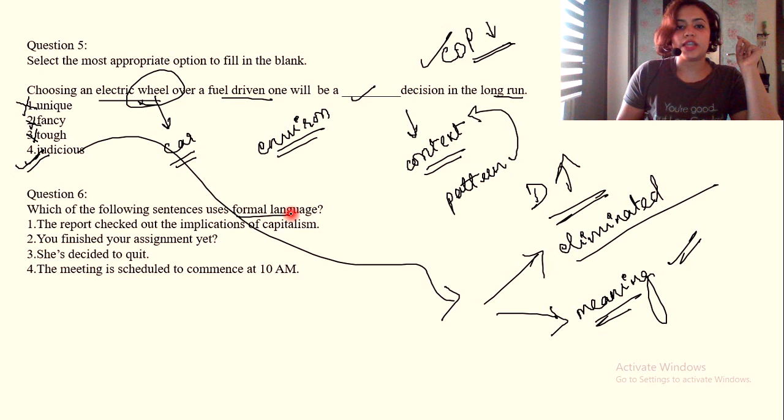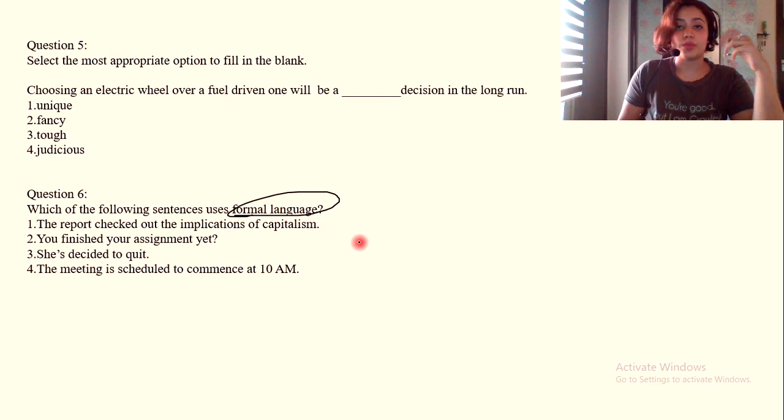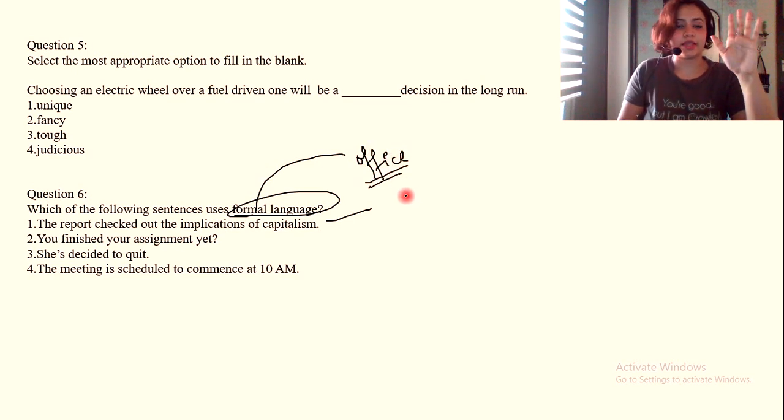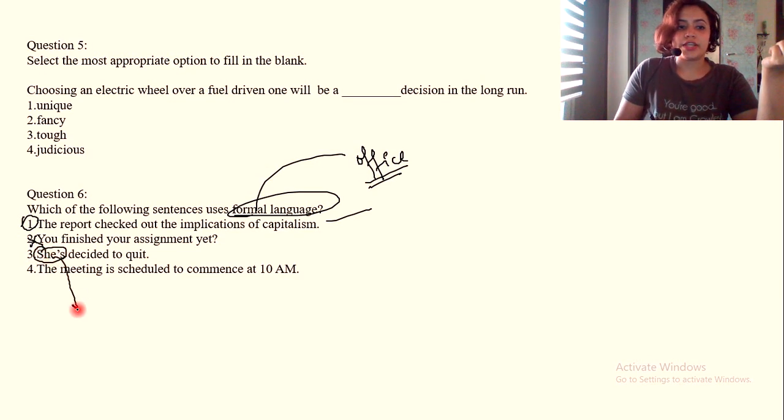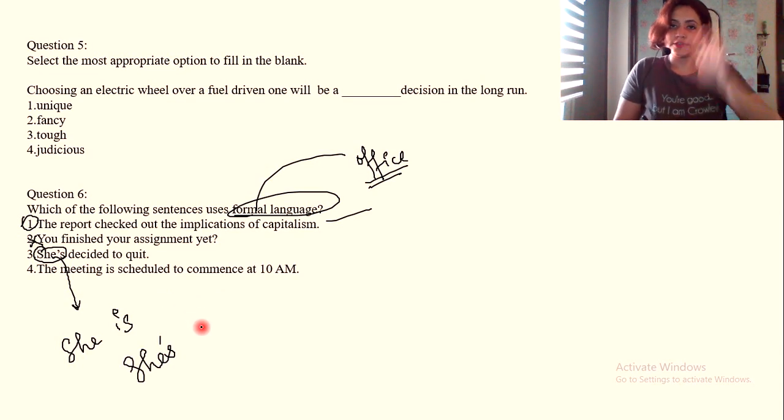Which of the following sentences uses formal language? These are messy questions but since we need formal language, let's go. The report checked out the implications of capitalism. See, according to me this is also in a way formal, but here I think they mean what kind of language you'd use in an office. You finished your assignment yet? Definitely informal, you talk like this with peers.